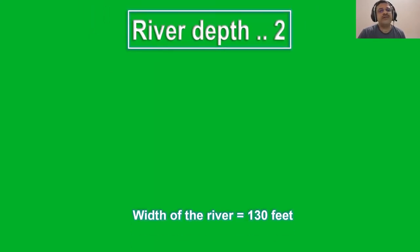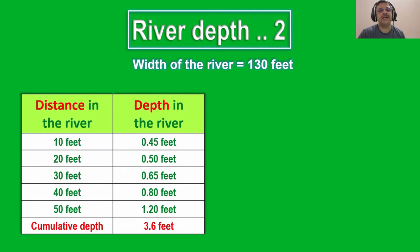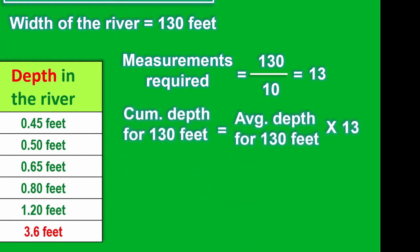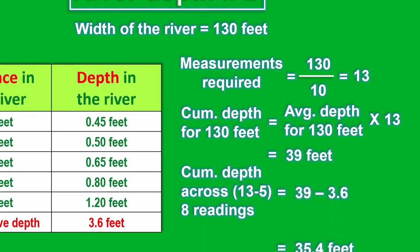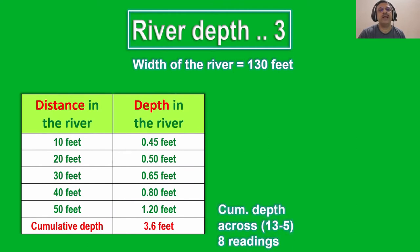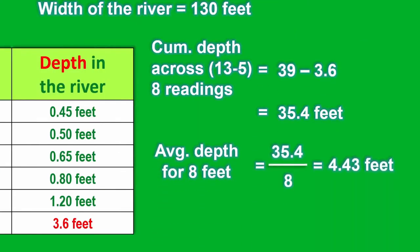If we are measuring the depth every 10 feet then we will have 13 measurements across 130 feet. Using the concept of average, to get an average depth of 3 feet we need a cumulative depth across the 13 measurements of 39 feet. This means that across 13 minus 5, which is 8 readings, we need a cumulative depth of 35.4 feet. This gives an average depth for this remaining distance of a little over 4 feet and 5 inches.